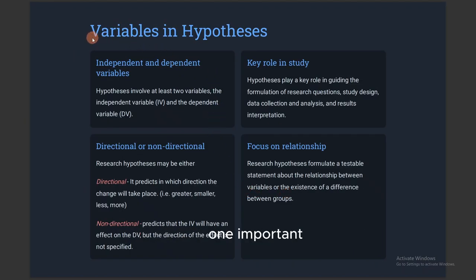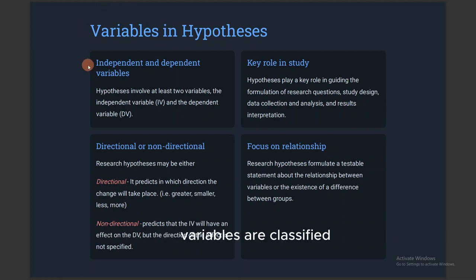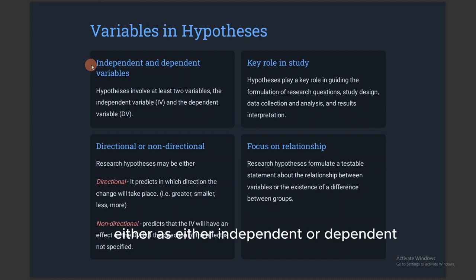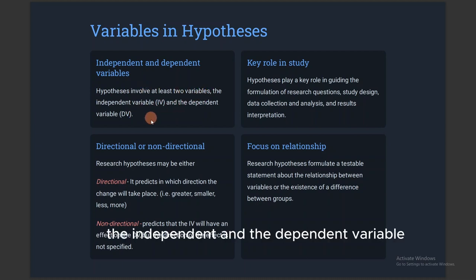One important aspect in research hypotheses is the issue of variables. Variables are classified as either independent or dependent. A hypothesis involves at least two variables: the independent and the dependent variable.